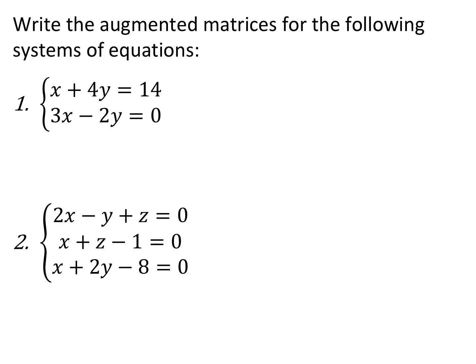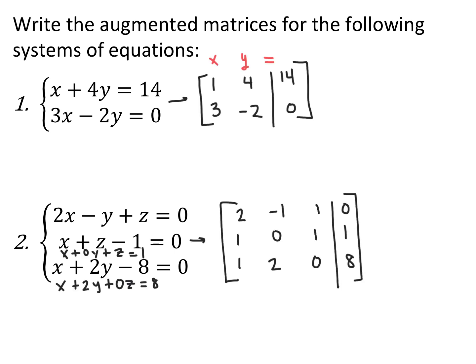Here we have two systems of equations — a system of two equations with two variables, and a system of three equations with three variables — and we want to write their augmented matrices. The bigger system follows the same idea: each row becomes an equation and each column becomes one of the coefficients of your variables. For the first one, x plus 4y equals 14 becomes 1, 4, 14, and 3x minus 2y equals 0 becomes 3, negative 2, 0. For the second system, you have to be careful because the equations are set equal to 0 but there are constants. You need to look at each variable and make sure you have its coefficient lined up in your matrix.